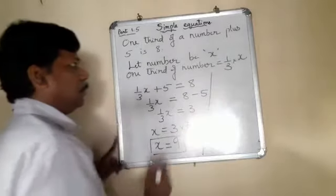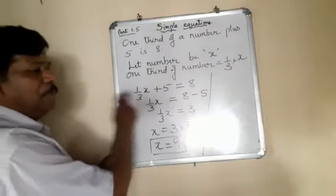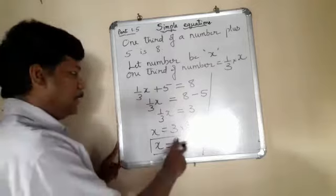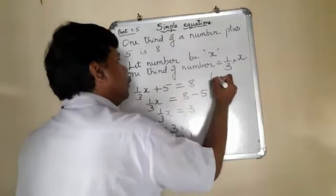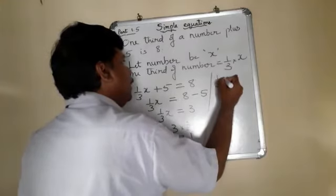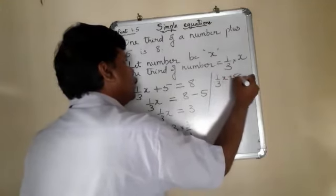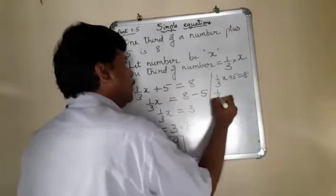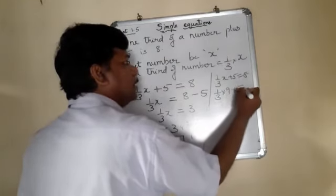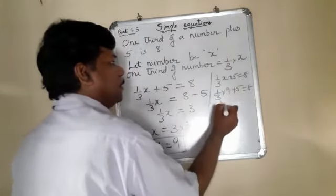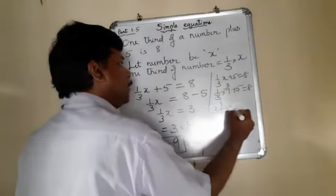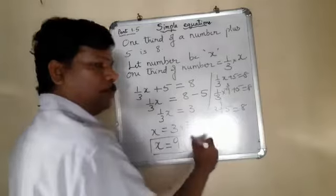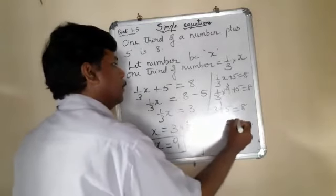So is our answer correct? Let us check it out. By putting the value of x as 9, let us see if it is true. So 1 by 3x plus 5 is equal to 8. 1 by 3 multiplied to 9 plus 5 is equal to 8. So this 3 and 9 cancels each other. So 3 plus 5 is equal to 8. So is it true? 8 is equal to 8.